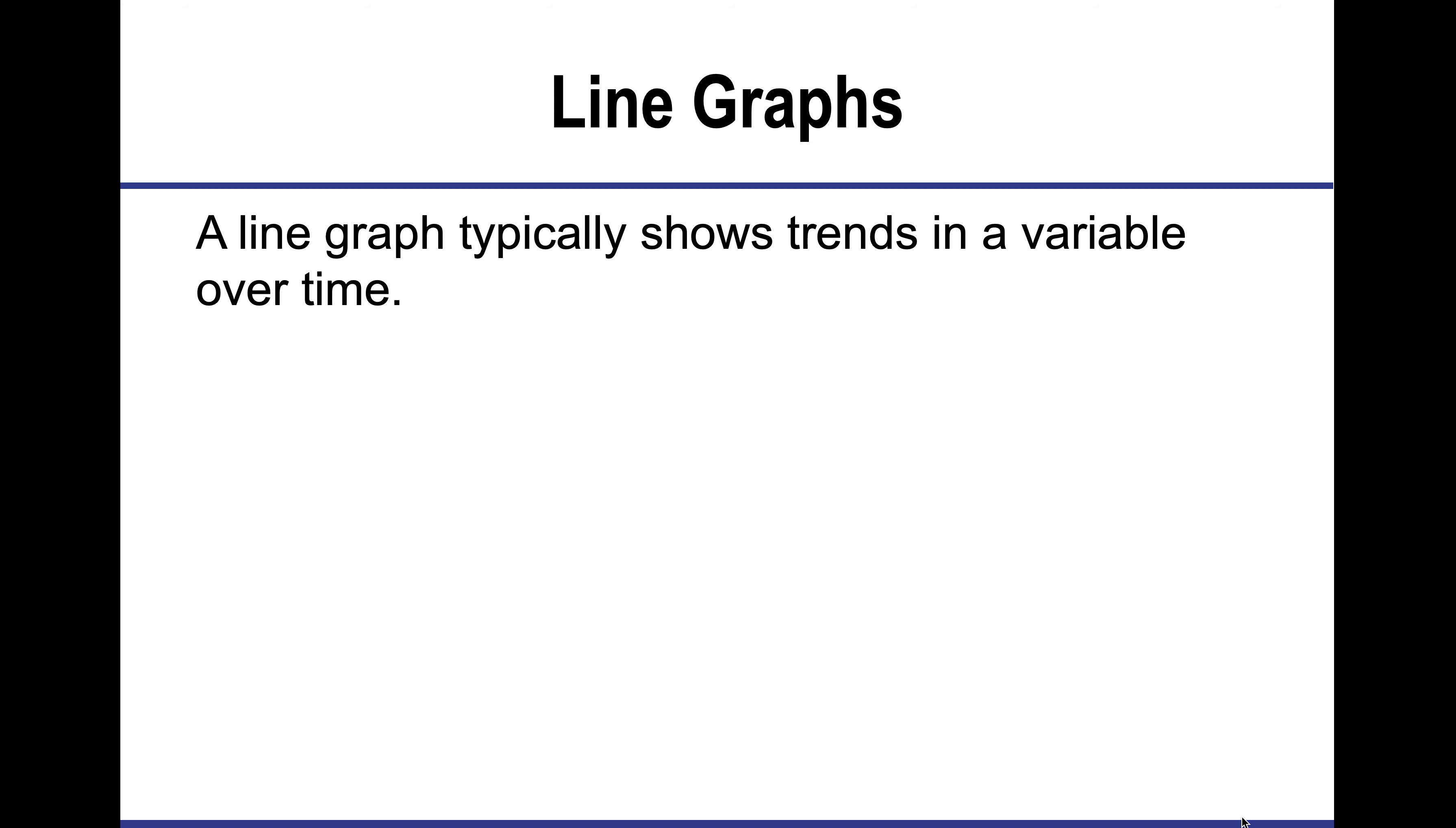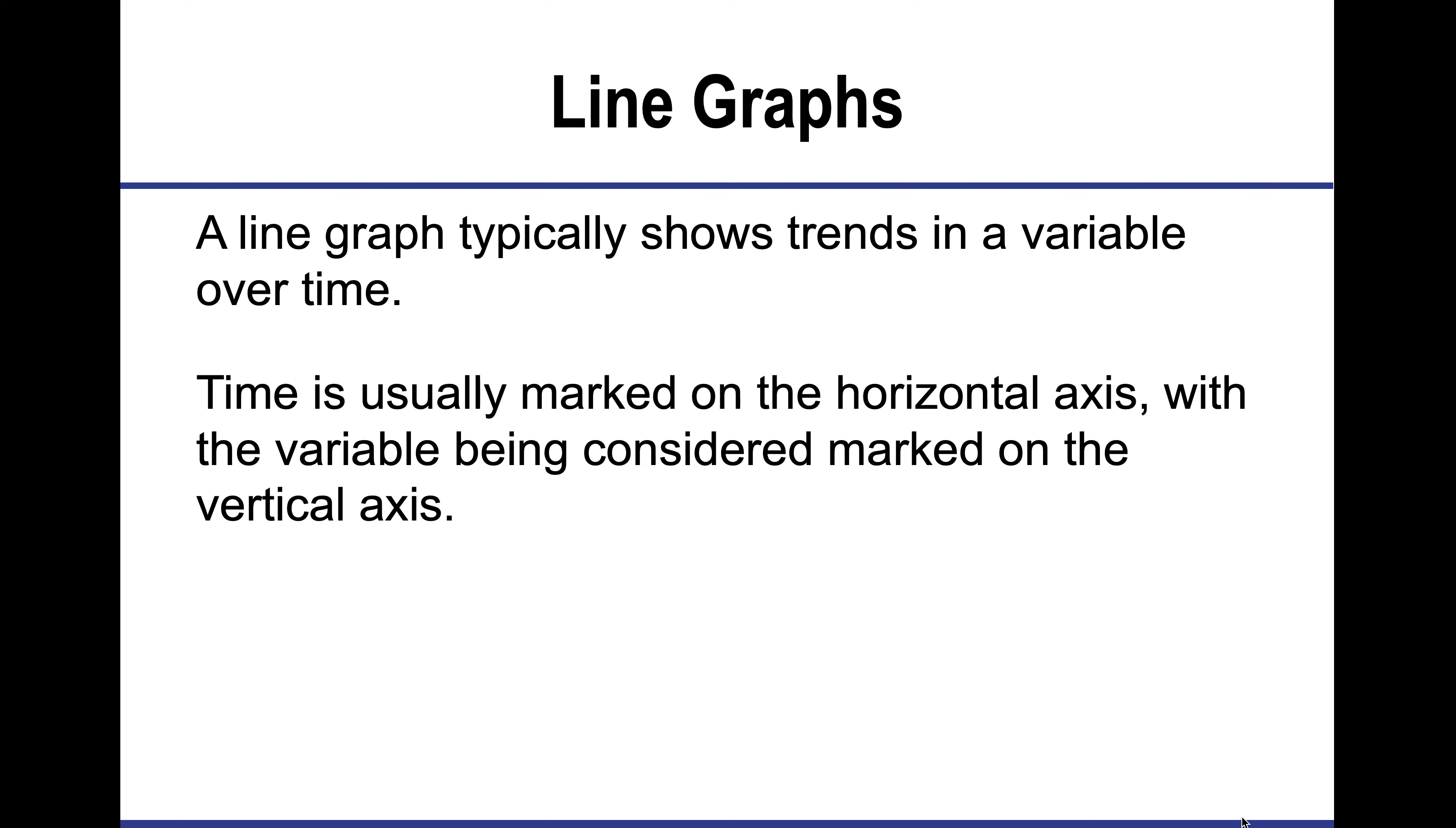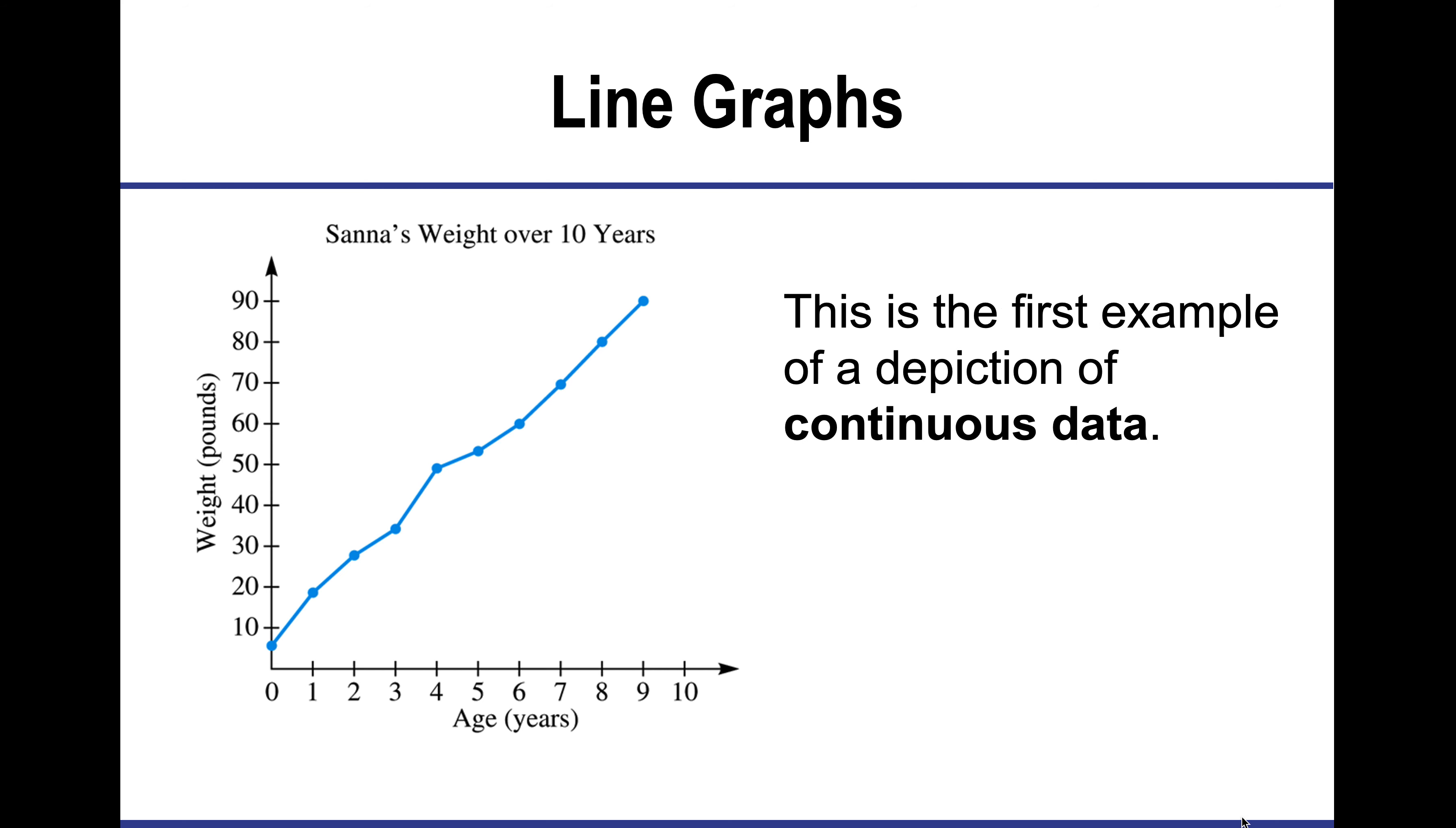Now a line graph typically shows a trend over a period of time. So when we're teaching our students about line graphs, that is a key thing we're looking for. Time is usually marked horizontally with the variable being considered on the vertical axis. Consecutive data points are connected by line segments. So this would be an example of a line graph.